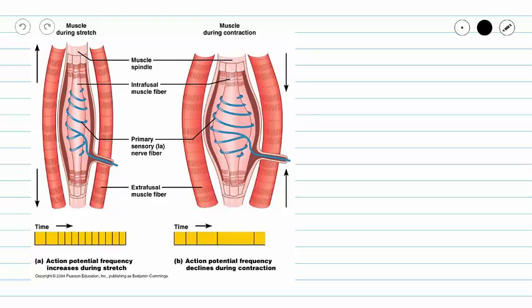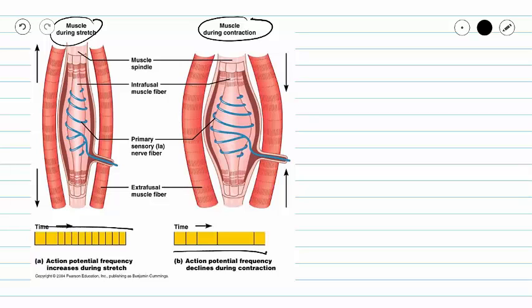These intrafusal fibers monitor the length of the skeletal muscle and are always sending information to our spinal cord. When the muscle is relaxed, a steady amount of signals is sent. While the muscle is contracting, very few signals are sent. But if the muscle stretches, the number of signals increases, telling the spinal cord that stretching is occurring.